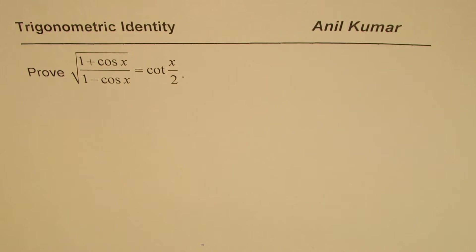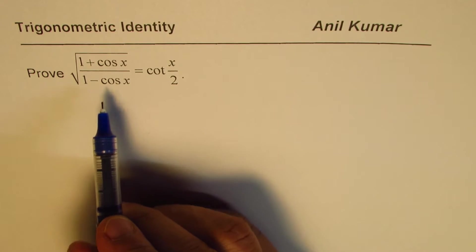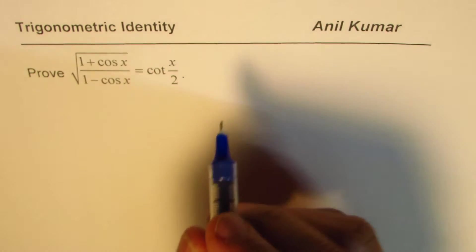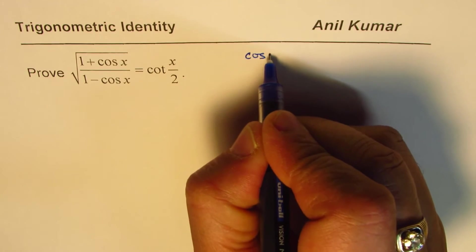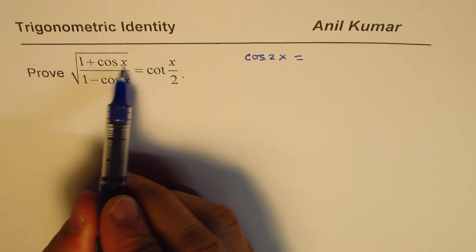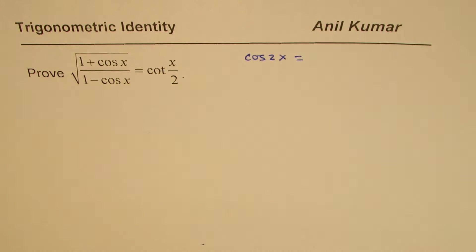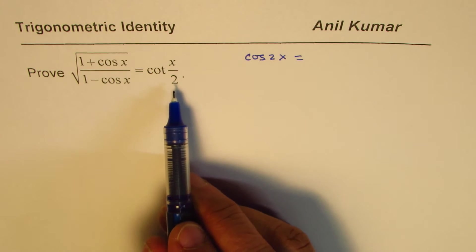I'm Anil Kumar, sharing with you a proof of a trigonometric identity. I'm going to apply this identity as a substitution for solving some differential calculus questions based on inverse trigonometric functions. Let's review what we have learned. I'll begin by reminding you of cos 2x formulas, and then we'll prove that the square root of (1 + cos x) / (1 - cos x) equals cot(x/2).